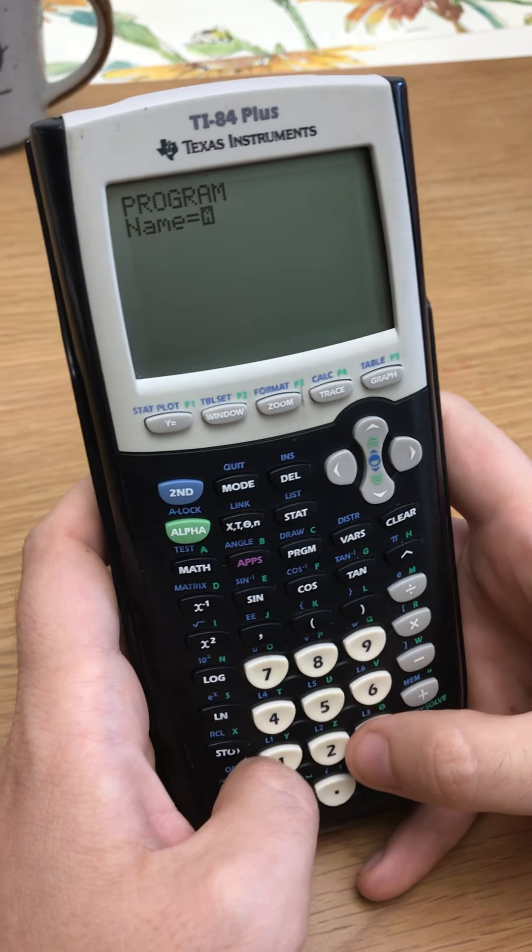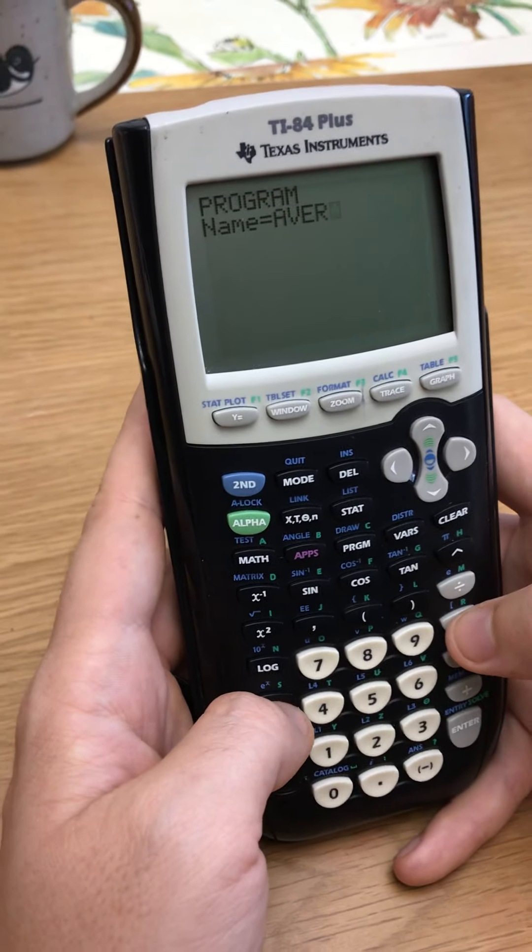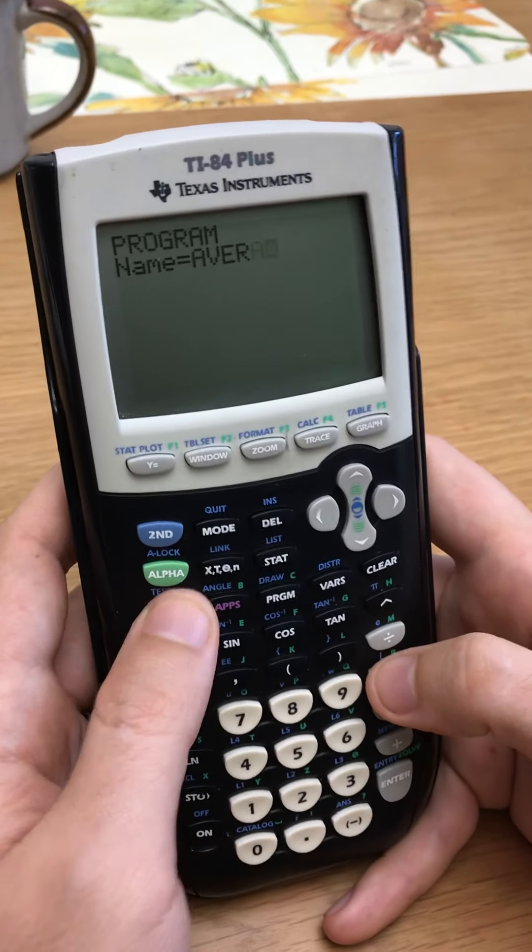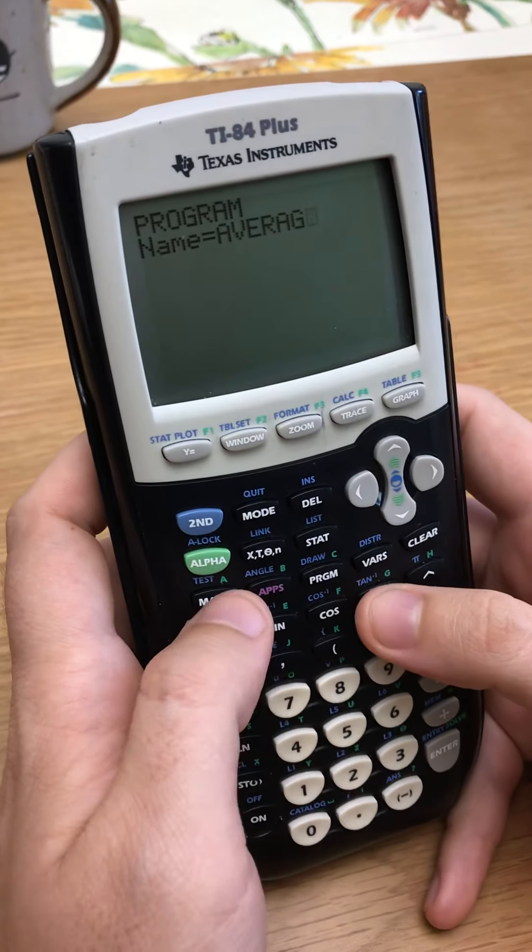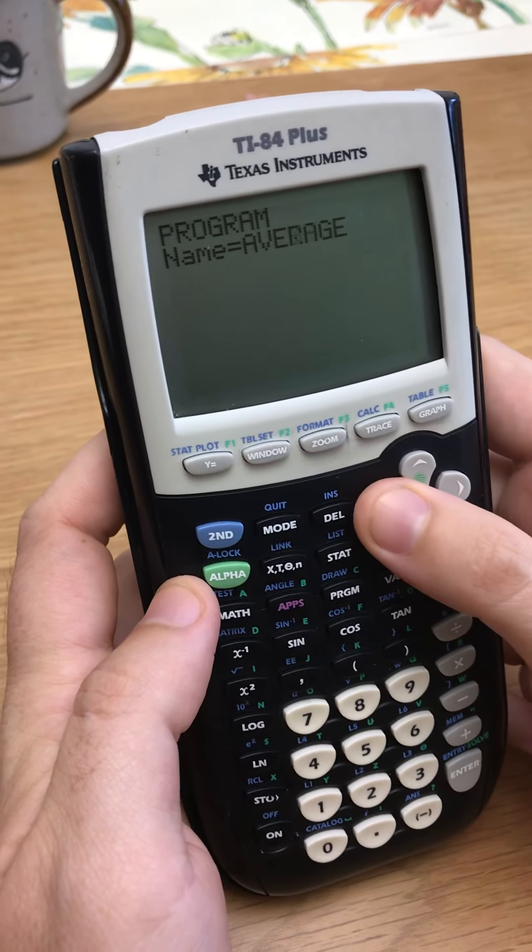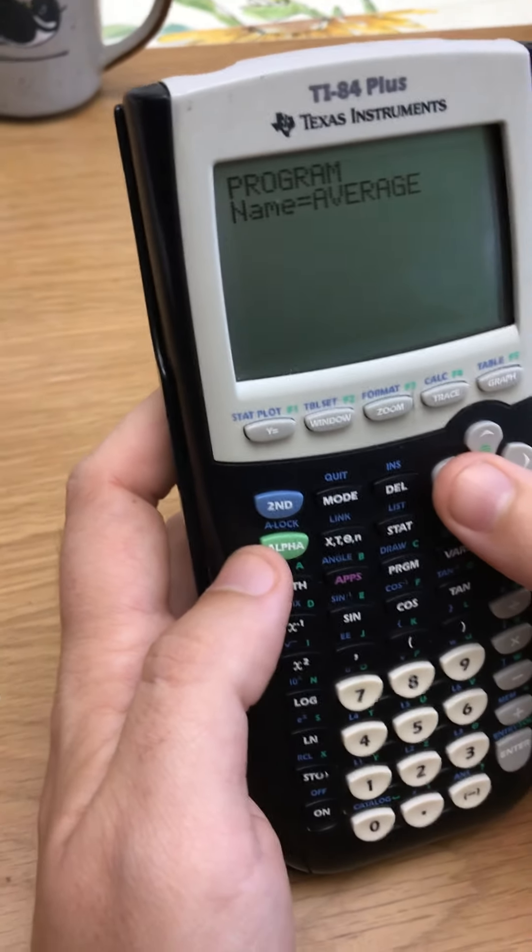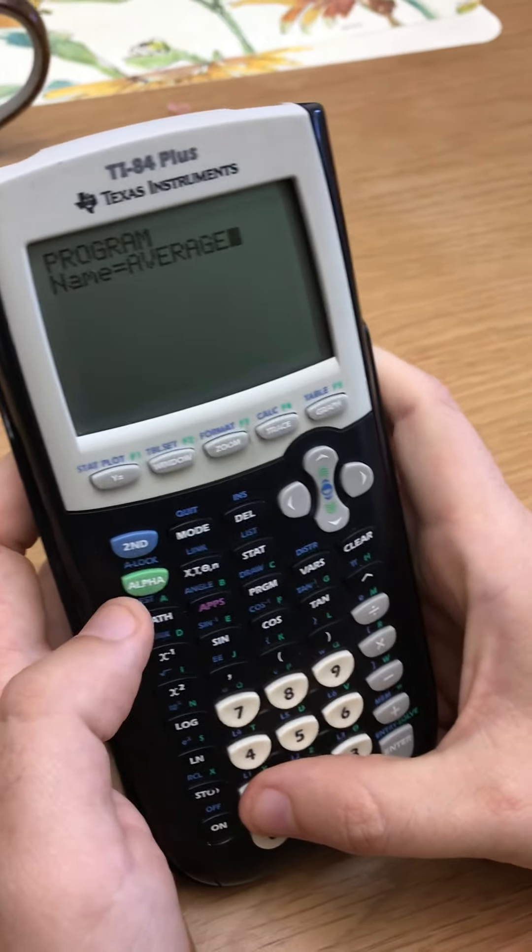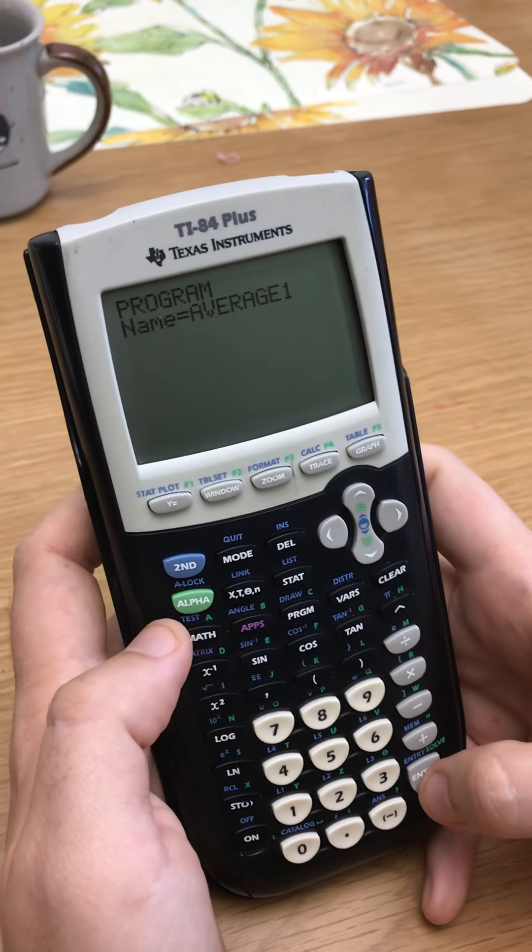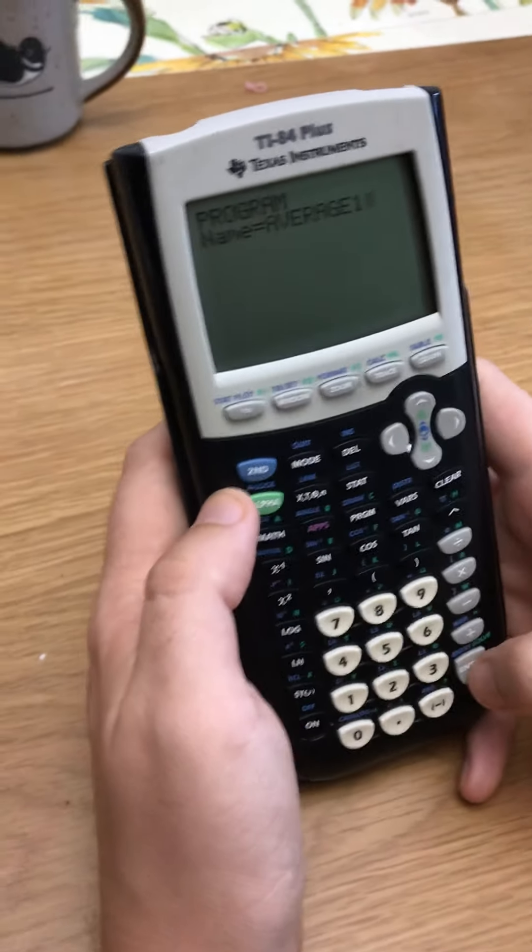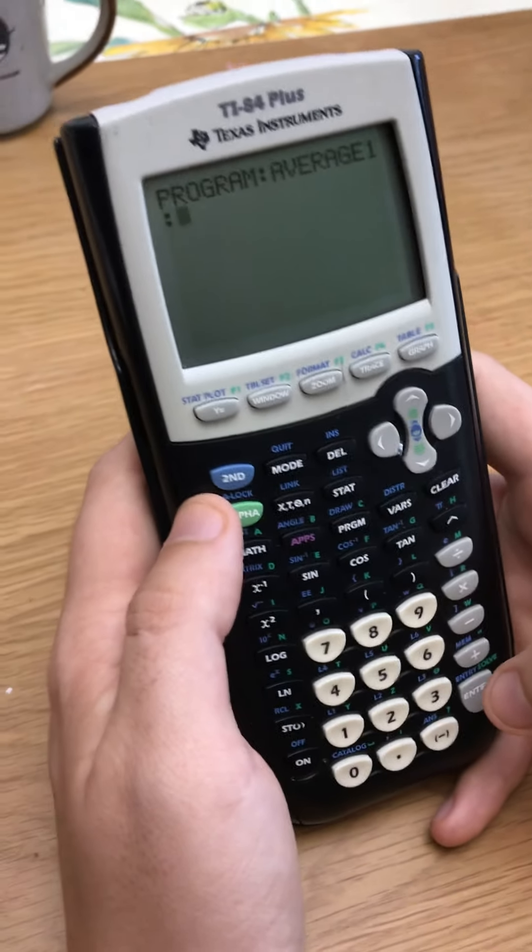So we want to name it something. Let's name it average. So A, V, E. And it's kind of hard to do this because it's not a QWERTY keyboard, but you know, it is what it is. Average, there we go. So also note that when you name your programs, you can only do eight characters. One, two, three, four, five, six, seven. I can do one more character if I want to. Maybe I'll put like a one here, press alpha to unlock my alpha. So average one, but notice I can't put a two. If I try to press two, it doesn't work. It can only hold eight characters. So when you name your thing, don't name it something super long, like the distance program. I couldn't name it distance formula because that wouldn't fit. So hit enter. Boom. Now I have a program called average one.